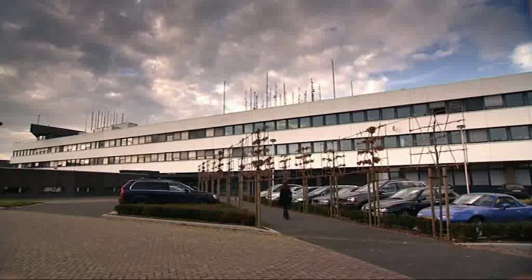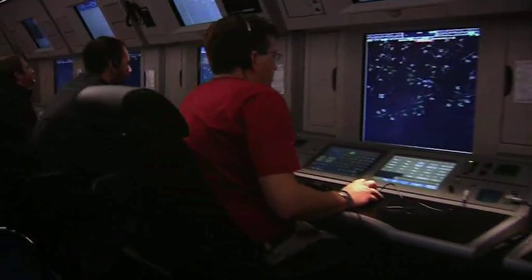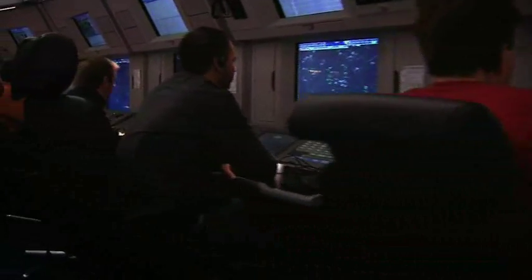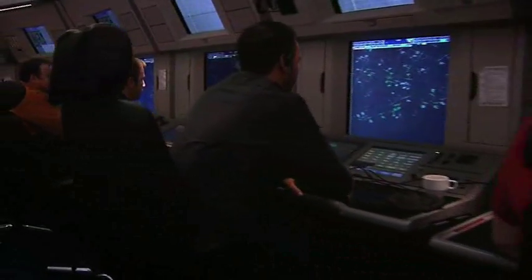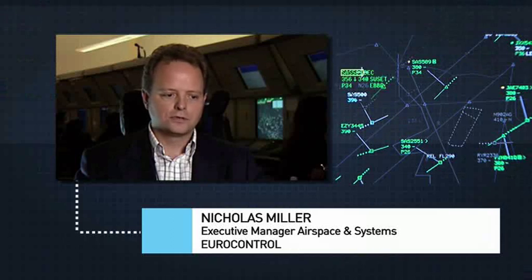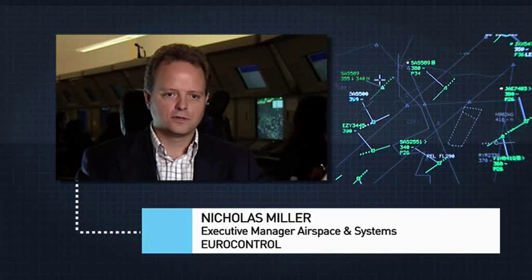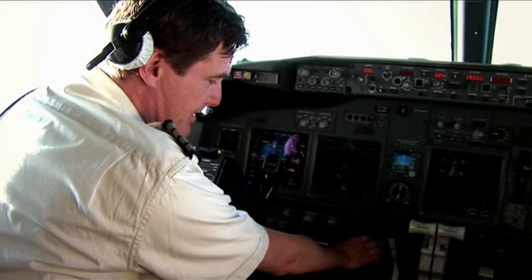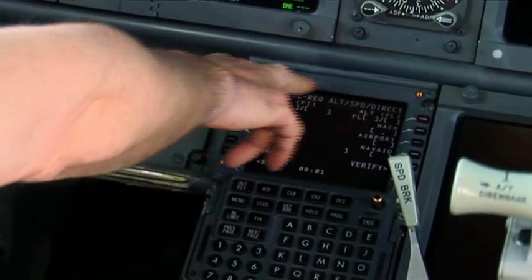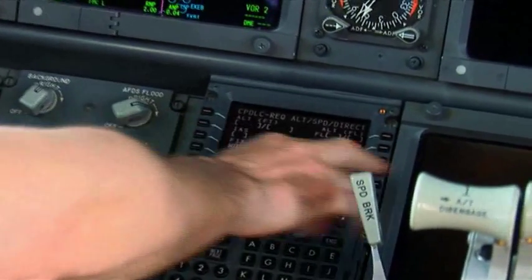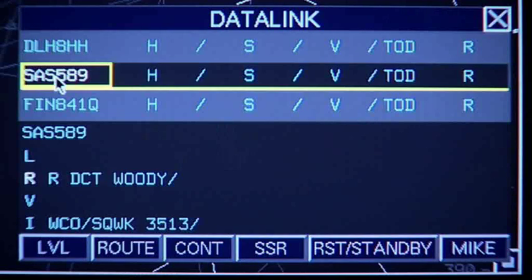At the Eurocontrol center in Maastricht, it's here that the CPDLC is tested — the first component of the data link communications that CESAR will develop. This is an electronic message which we can produce to the ground. It's very standardized messages, and this will be transmitted through the air onto the display of the cockpit. If the pilot wants to request a change of course, there's no further need for radio contact — he enters his request in the onboard terminal and the air traffic controller sends him the answer by text message.